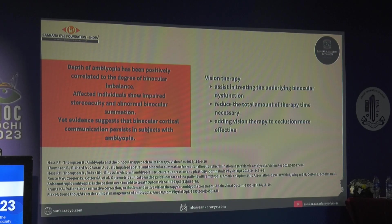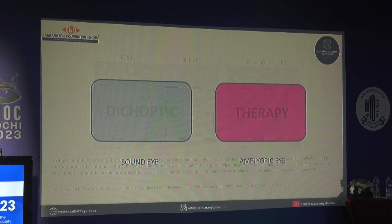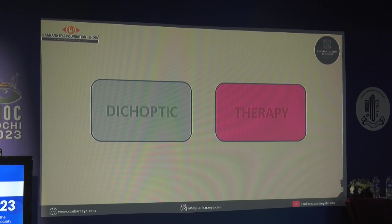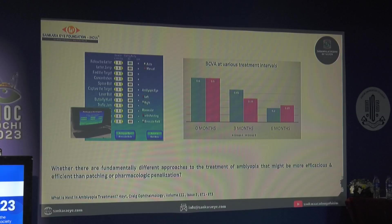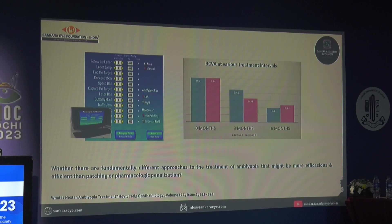The depth of amblyopia is correlated to binocular imbalance, and some binocular cortical communication persists in subjects with amblyopia. This functions on what is called the dichoptic principle: the dominant eye receives a much lower-contrast stimulus, making the brain use the amblyopic eye more. Starting with the dominant eye under lower contrast, you gradually increase it over time until it becomes equal — as therapy enhances, contrast also improves.